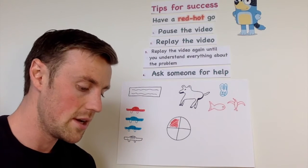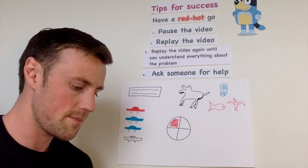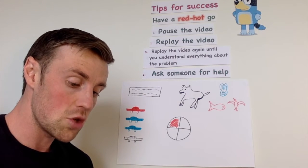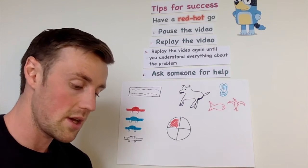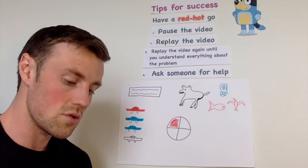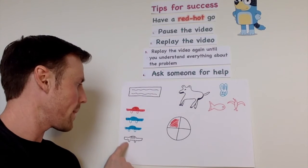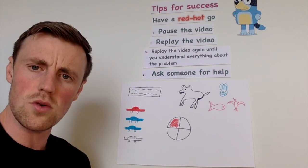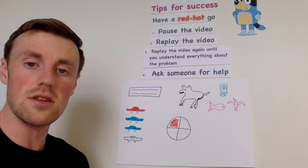Question three. Looking outside my bedroom window, I saw a total of four cars on the weekend. I saw one red car, two blue cars, and one white car. Draw the cars in your book and circle the cars that equal two quarters or two fourths. I've actually done this one here for you. Circle the cars that equal two quarters or two fourths. Pause the video if you need time.